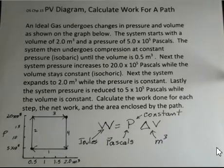We're starting with a volume of 2 cubic meters, a pressure of 5 times 10 to the 5th pascals, and the system has a constant pressure change, reducing the volume to 0.5 cubic meters.